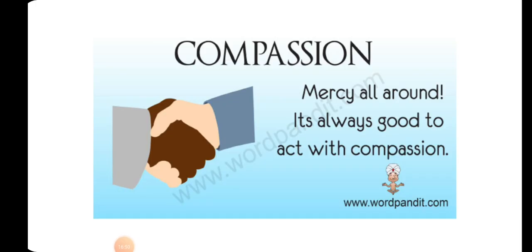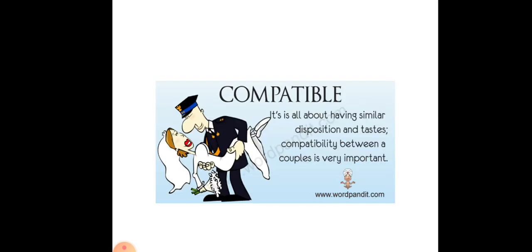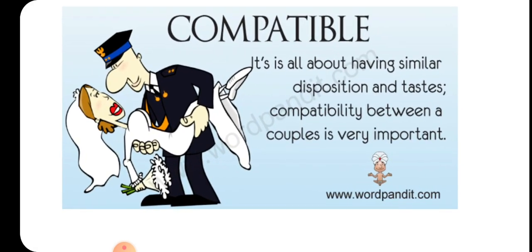The next word is 'compassion' — having passion towards others. It's a strong feeling of sympathy for people who are suffering and a desire to help them. To feel or show compassion is to have sympathy for others. Remember, passion itself is the clue — having passion for others is compassion. The next one is 'compatible' — a very easy word. Compatible means when two people can have a good relationship because they have similar ideas or interests. The antonym for compatible is incompatible.